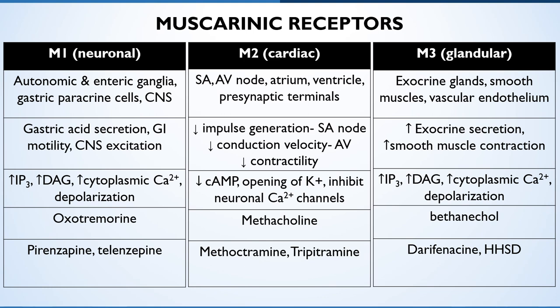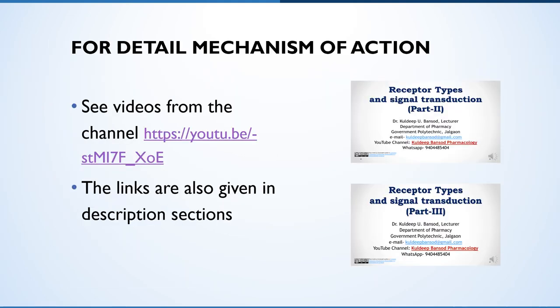The remaining M4 and M5 receptors are largely confined to the central nervous system, but their functional role is poorly understood. For detailed mechanism of action of these receptors, see the previous videos on this channel; the link is given in the description section.